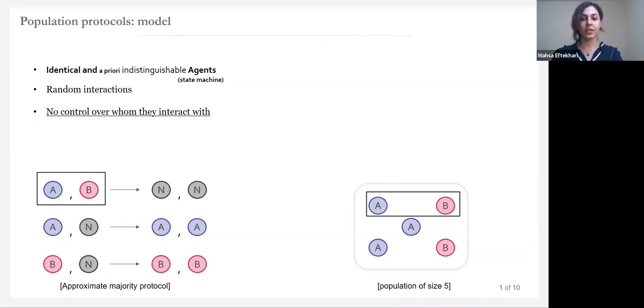In every interaction, a random scheduler selects an ordered pair of agents independently and uniformly at random. The agents observe the state of the other one and update their own according to the predefined rules of the protocol. For example, if these agents in state A and B interact, they both change to state N. And if these agents in state A and N interact, they both change to state A.